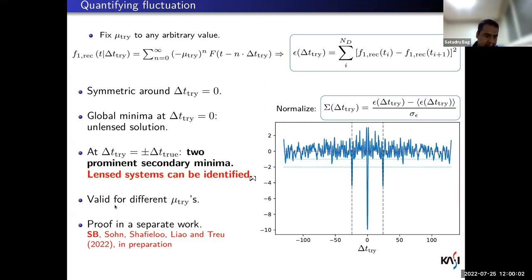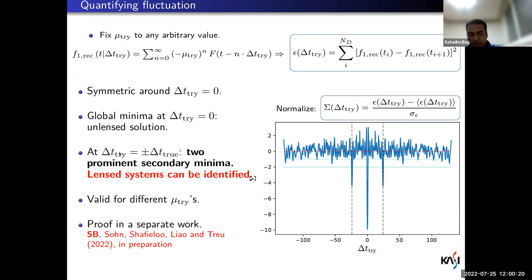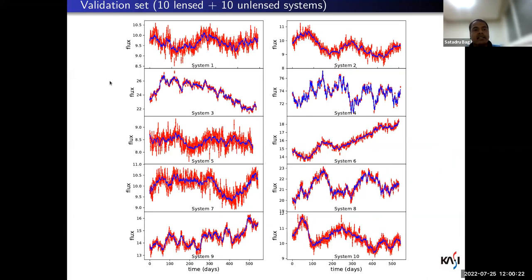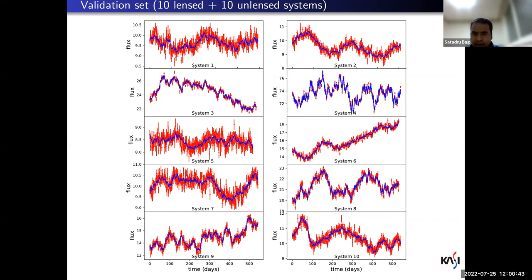If you are wondering why these characteristics appear in the fluctuation curve, we dig deep into the mathematical foundation in a separate paper, and at the end I'll very briefly explain why these features appear. For validation, we test this method on a bunch of simulated systems with different types of flux variability. The blue curves are best quality data with marginal noise, and the red data points have ZTF-like noise.